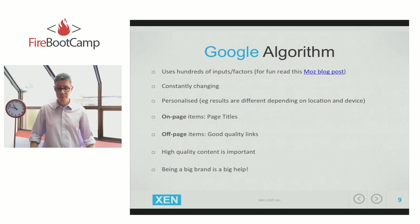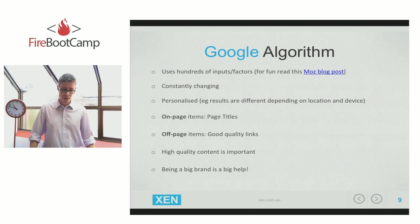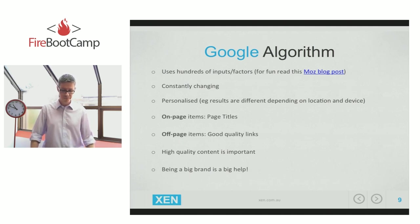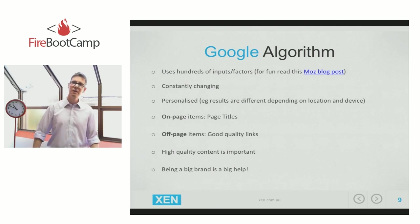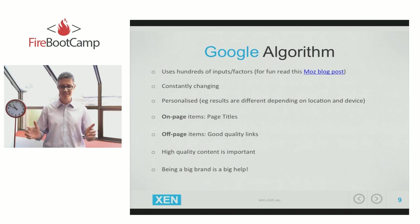The Google algorithm takes into its calculations on-page items — today I'm going to talk about page titles — and off-page items, which is getting links from other sites. High quality content is becoming more important. Gone are the days when you could rank any old rubbish based on some spammy links. The push to quality is definitely on. That's not to say you won't find rubbish in Google results — it's not perfect — but it's definitely getting better quality.